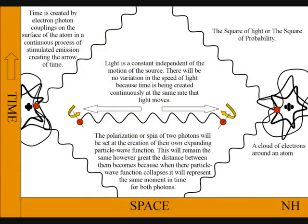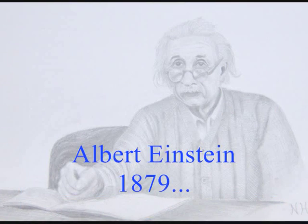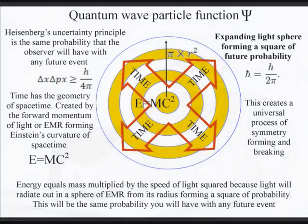Objects form their own space-time geometry, forming a square of probability. Therefore we have Einstein's famous equation, energy equals mass, times the speed of light squared.